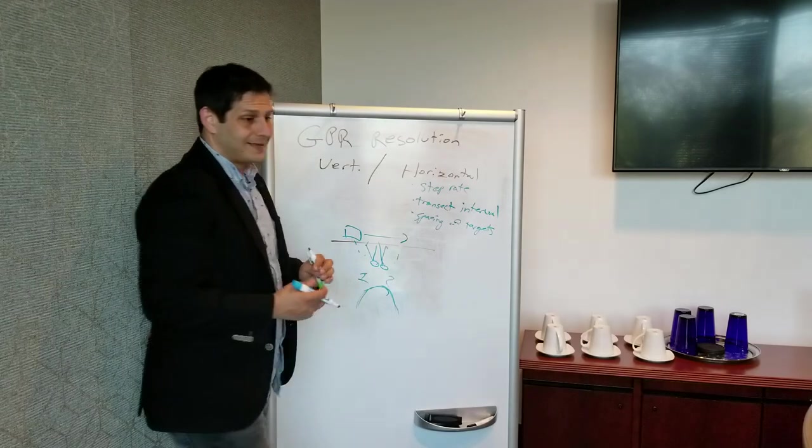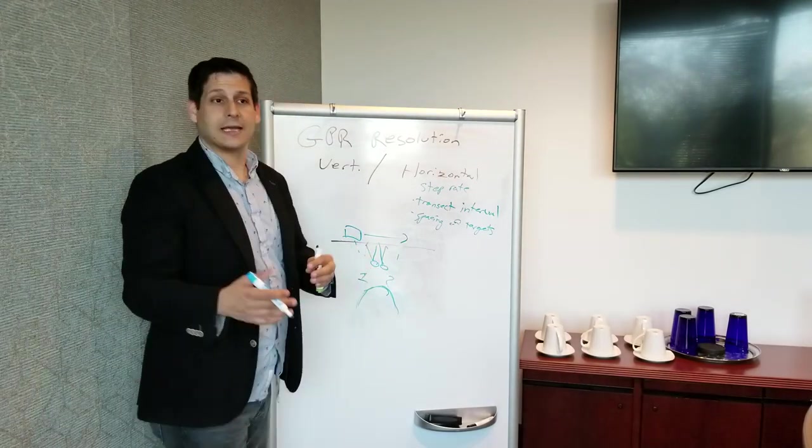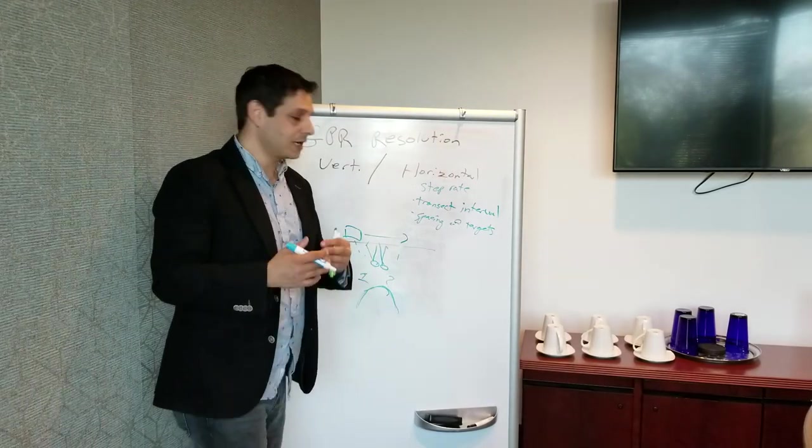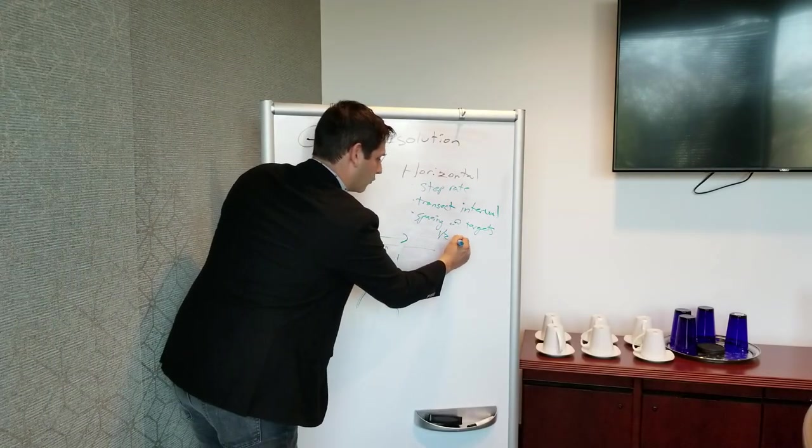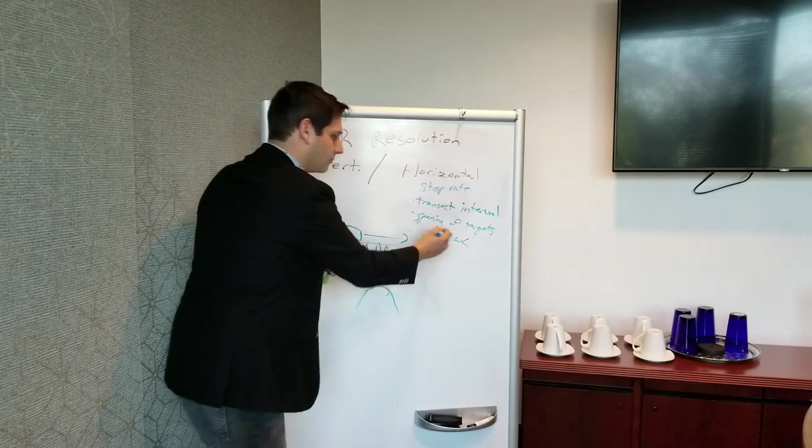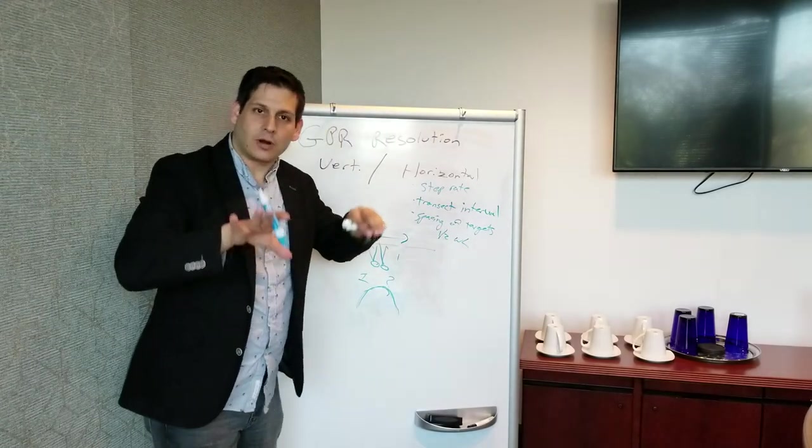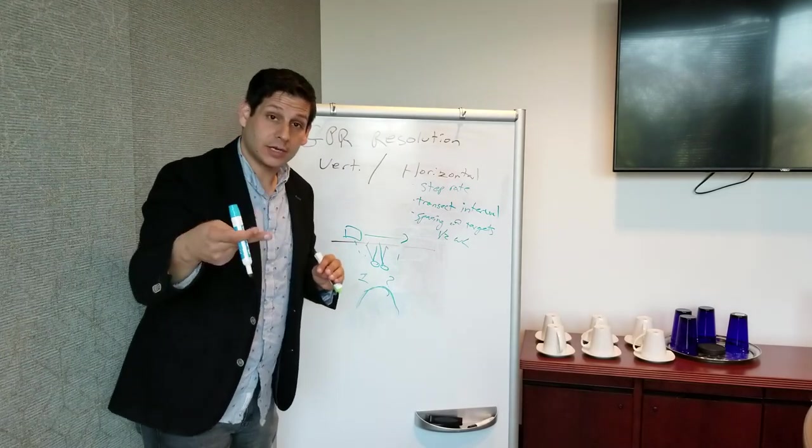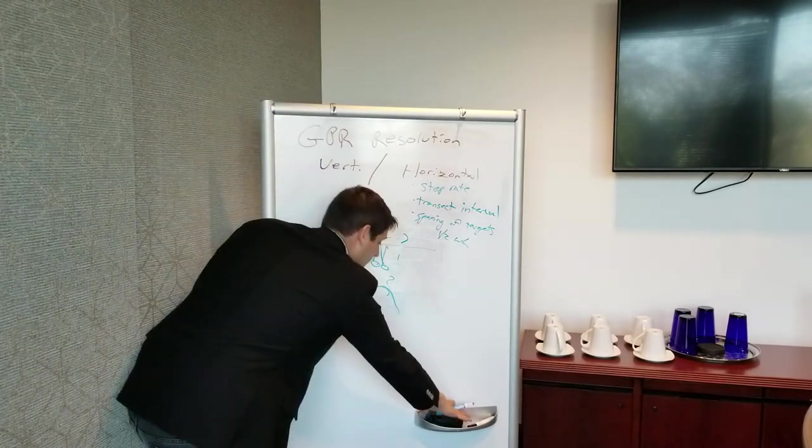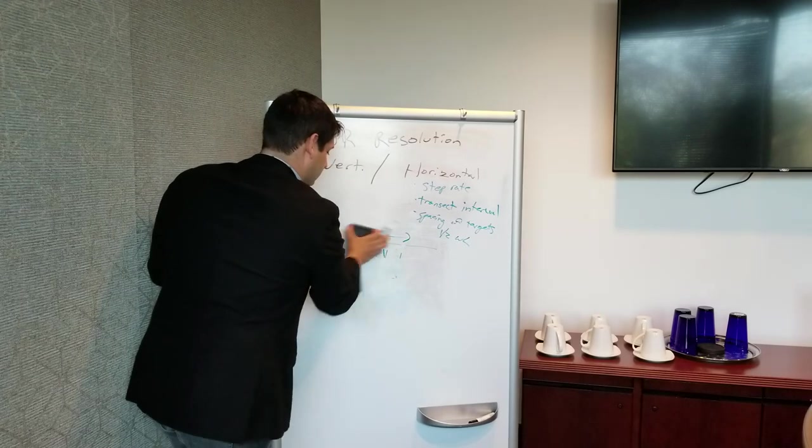However, if they're too close, what may happen is that you get a single, instead of two hyperbola, like before, what you might get are overlapping responses. And you might get something along the lines of this. There might be a broadened hyperbola, but how far apart do these have to be? That's another question for horizontal resolution. And generally, in my investigations, in my review of literature, my understanding is about one half of a wavelength is how far they have to be apart, minimum. One half of a wavelength to resolve both targets.